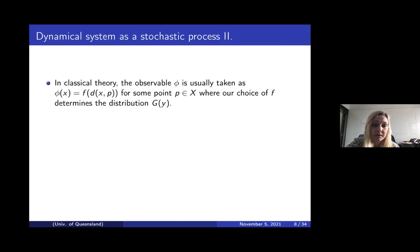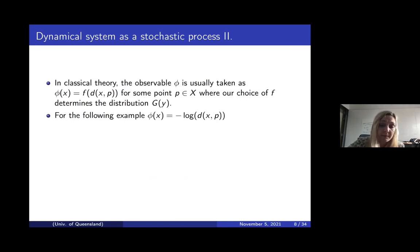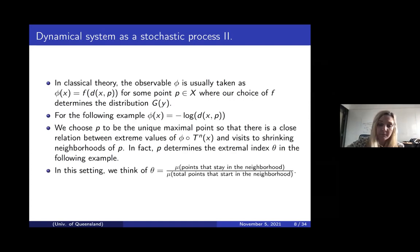In classical theory we often take the observable to be some function of the distance between x and a fixed point p in the space, where our choice of function determines one of those three types of distributions. For the example in dynamics, we take our observable to be the negative log of the distance between x and the fixed point p, so that p is the unique maximal point. There is a relationship between obtaining extreme values in our system and visiting shrinking neighborhoods about p — in fact, p determines our extremal index and the extreme value law. In this setting, the extremal index is the measure of points that stay in the neighborhood divided by the measure of total points that start in the neighborhood.